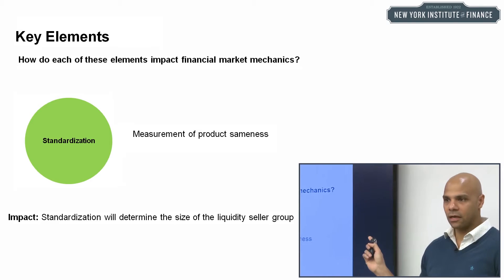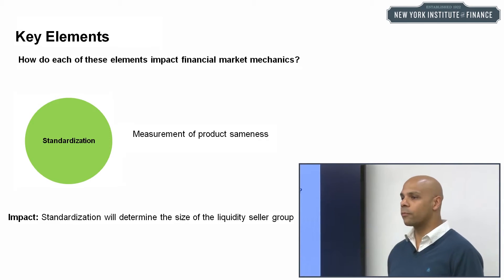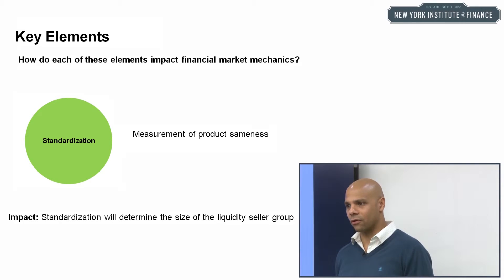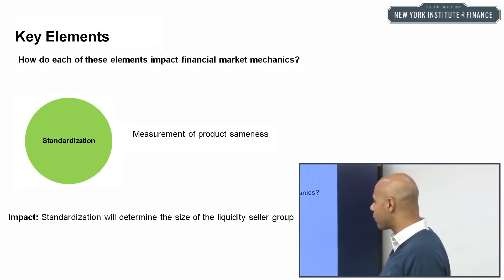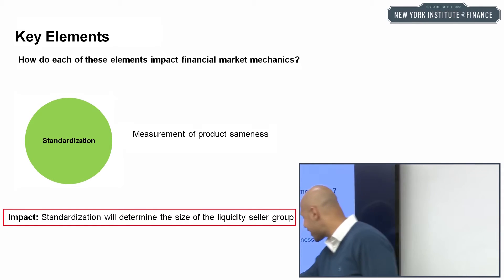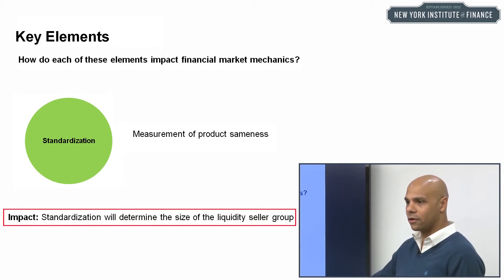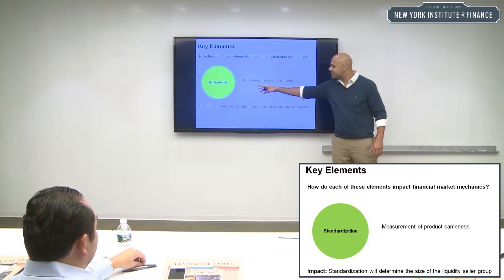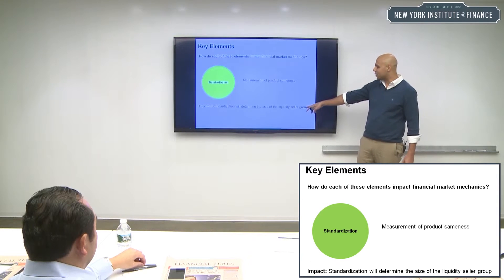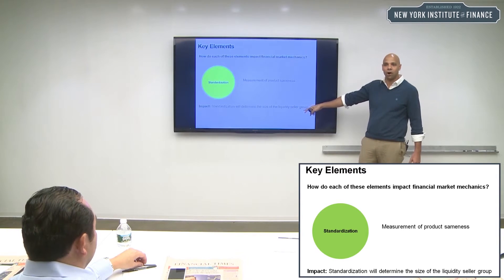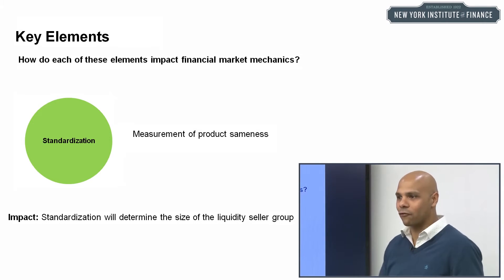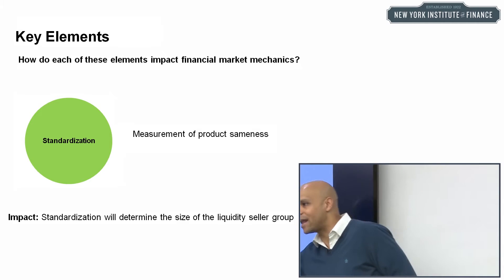The last element is standardization — the measurement of product sameness. You hear this a lot: 'to improve the market, standardize the product.' But what does standardizing actually do? It determines the size of the liquidity seller group. So while natural demand determines the size of the liquidity buyer group, standardization determines the size of the liquidity seller group — how many people can offer this service of predictable immediacy.